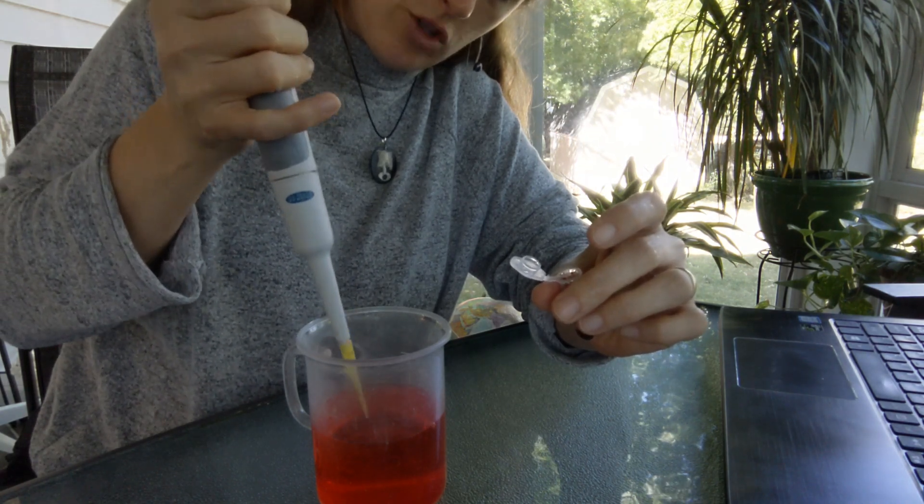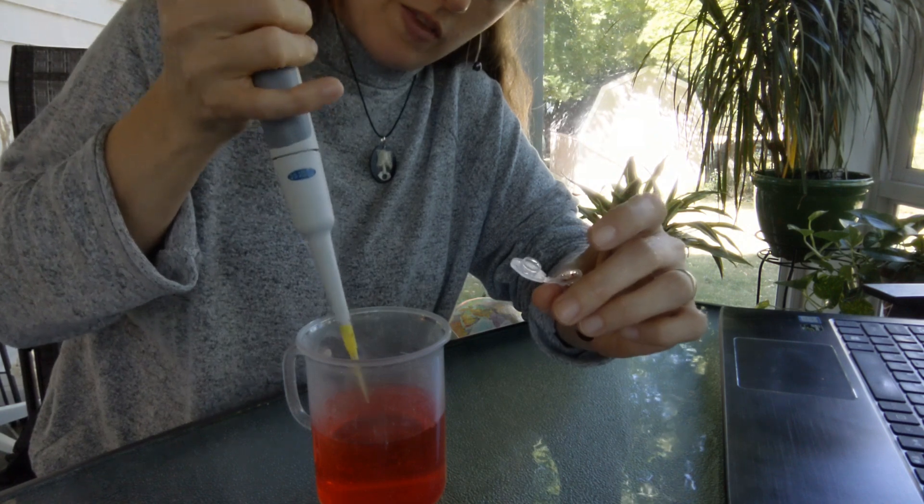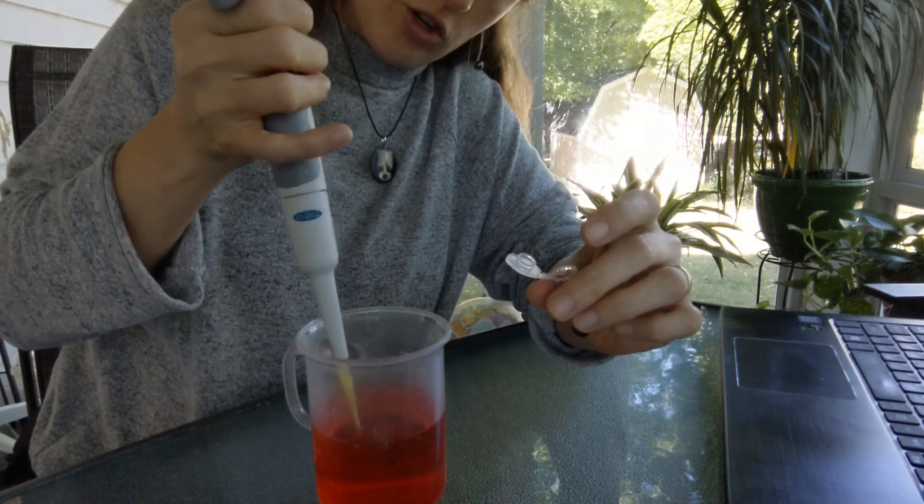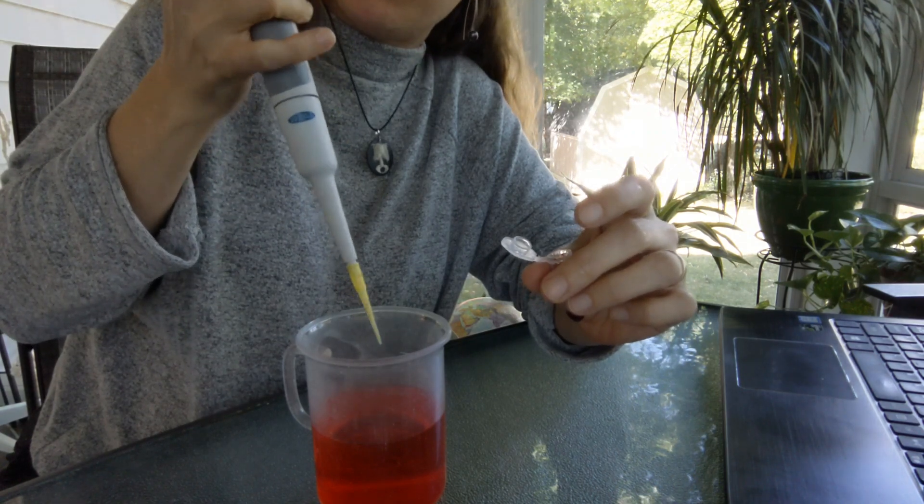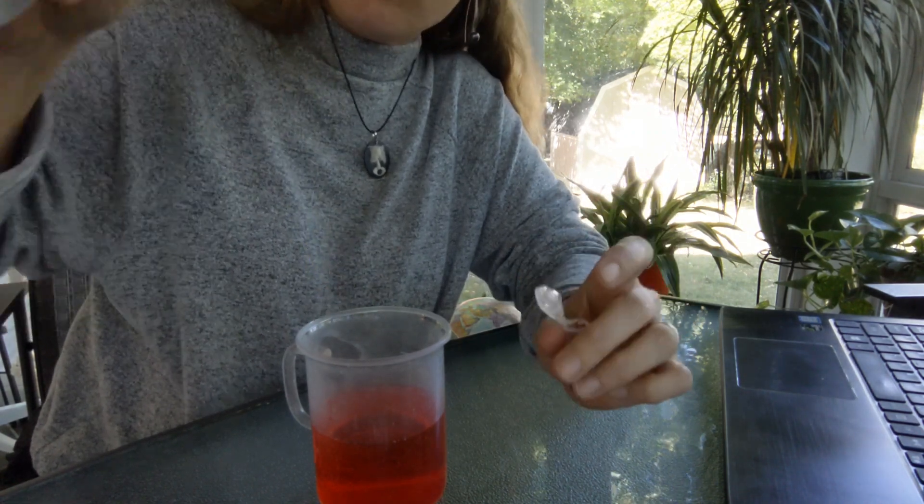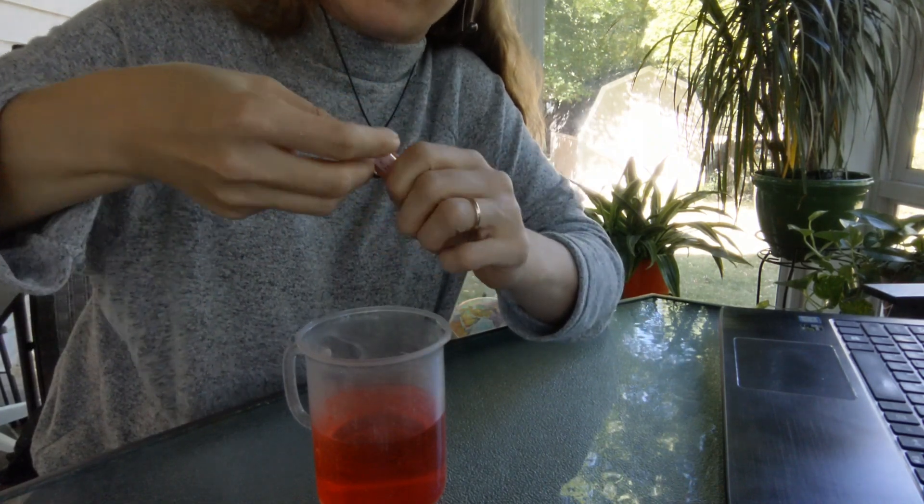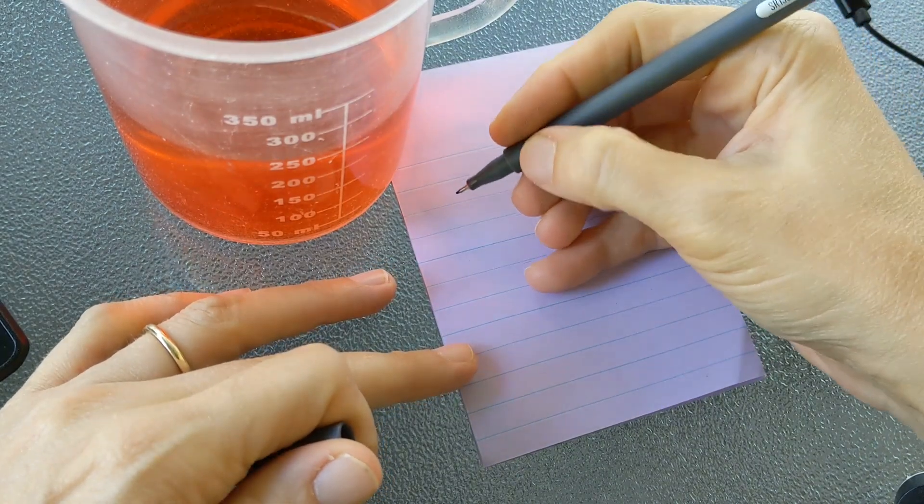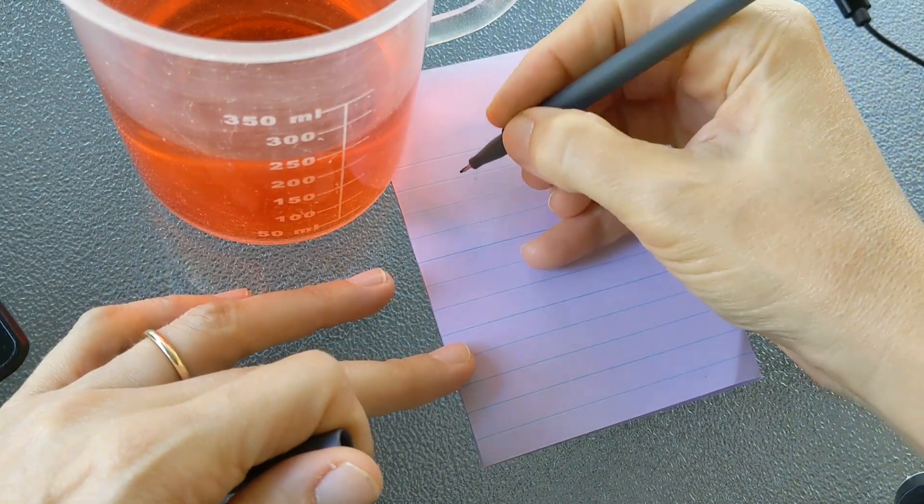So there I really rinsed the tip thoroughly to make sure every single bit of dye ended up in my mystery solution. I could go darker, I could go lighter. There's no right answer to how you make your mystery solution. The important thing is that you know how you made it. The next step is to make your calculation and then hold on to it until you actually do this lab.